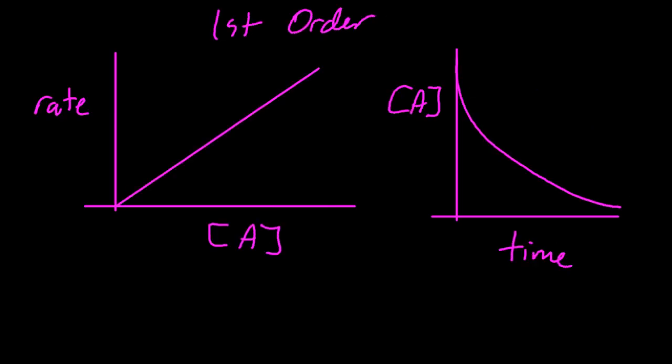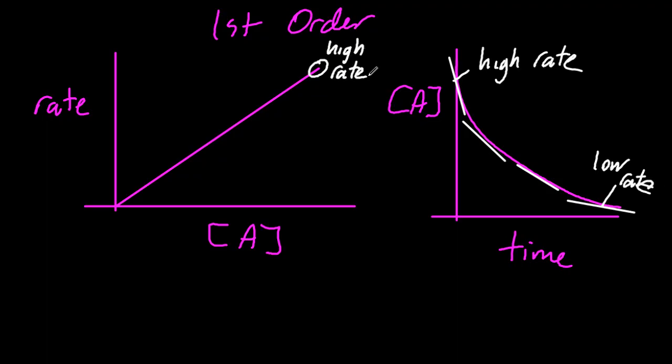For first order, we've got these two graphs. High rate at the beginning, low rate at the end. High rate, high A, low rate, low A. And that's reflected in the graph on the left.